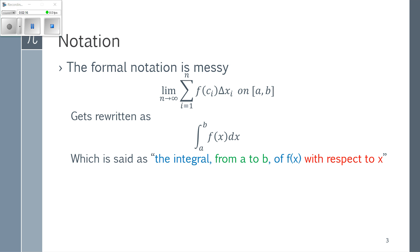So the full notation is: a limit as n goes to infinity of the sum from one to n — in other words, the number of rectangles is going to infinity and we add up the areas, f(c_i) times Δx_i, of each rectangle on the interval from a to b.